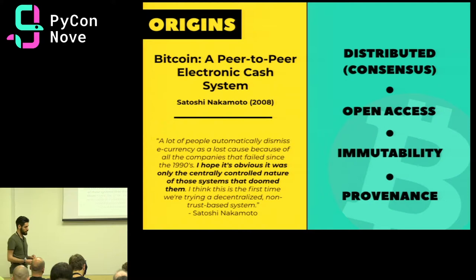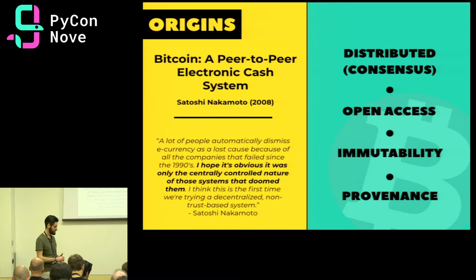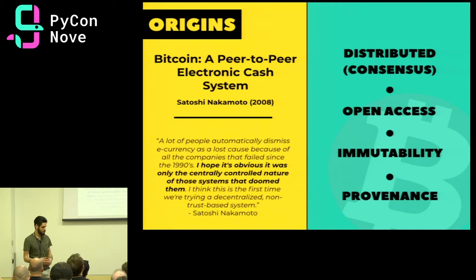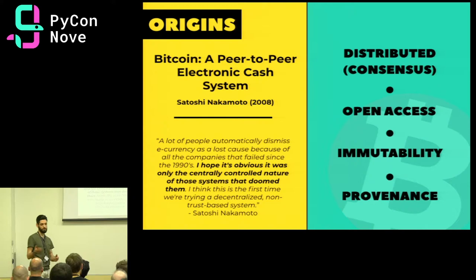Bitcoin's first inception was proposed in 2008 by someone — we don't actually know who he is — named Satoshi Nakamoto, who published the paper 'Bitcoin: A Peer-to-Peer Electronic Cash System.' In it, he proposed a decentralized, immutable, distributed ledger database which could be used to transfer digital tokens — Bitcoins — which could be used as digital money, across untrusted parties.